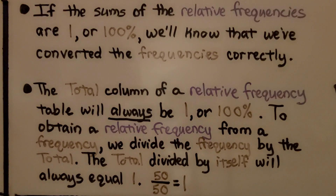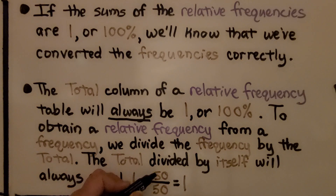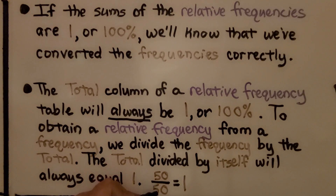If the sums of the relative frequencies are 1 or 100%, we'll know we've converted the frequencies correctly. The total column of a relative frequency table will always be 1 or 100%. To obtain a relative frequency from a frequency, we divide the frequency by the total. The total divided by itself will always equal 1 — so 50 fiftieths, same numerator and denominator, equals 1.